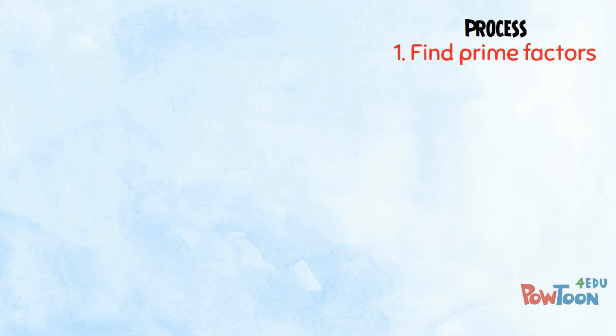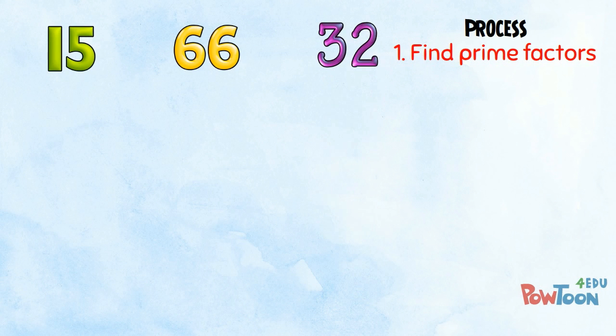Here's my process. First, we find the prime factorization of each of the numbers. 15 is from 3 times 5. Both prime.